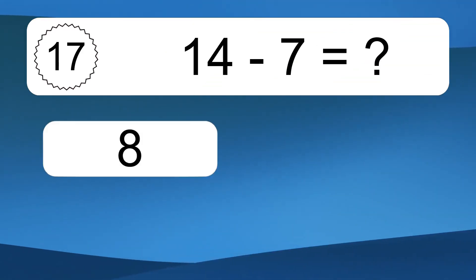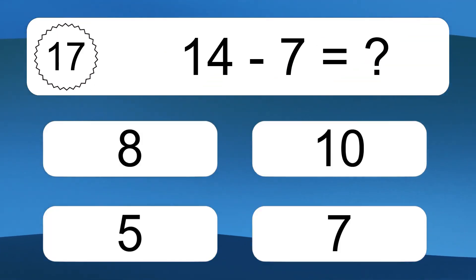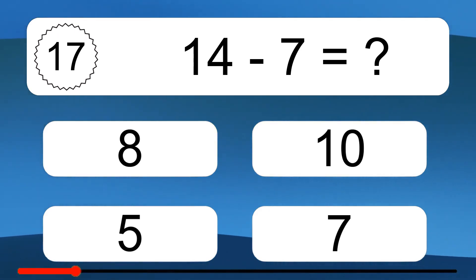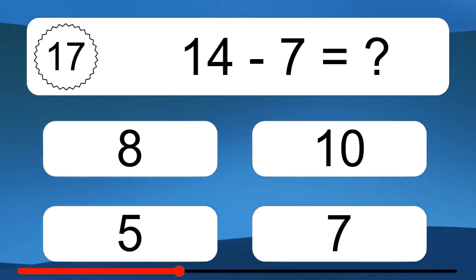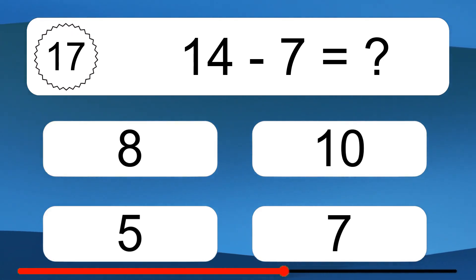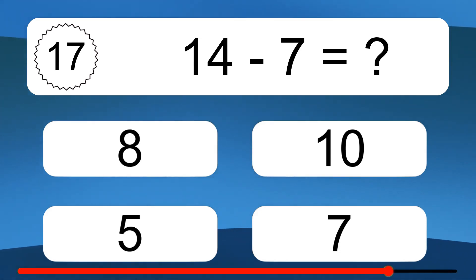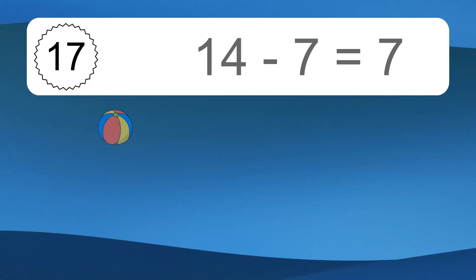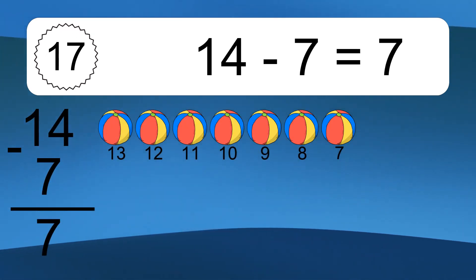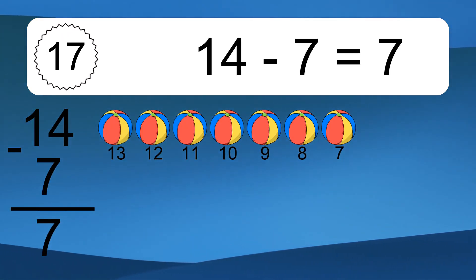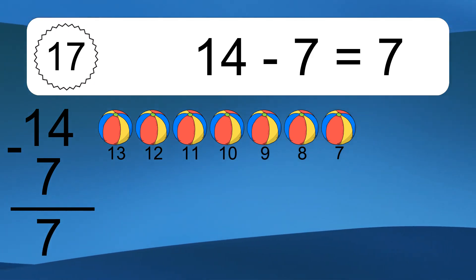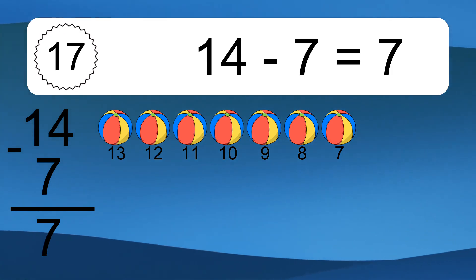14 minus 7 equals what? 14 minus 7 equals 7. Let's count it: 13, 12, 11, 10, 9, 8, 7.